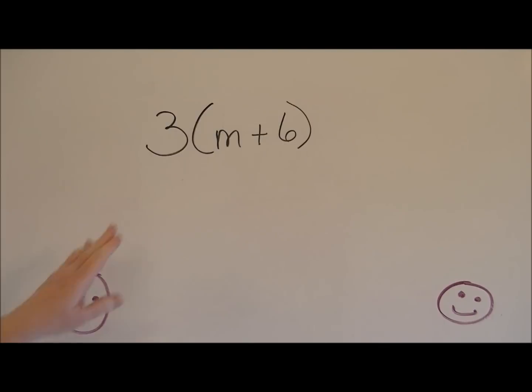The three is bumped up against the parentheses. There's not a plus, there's not a minus between the three and the parentheses. So this means that you're going to multiply three by both of the things in the parentheses. We have a variable m and then we have the number six.